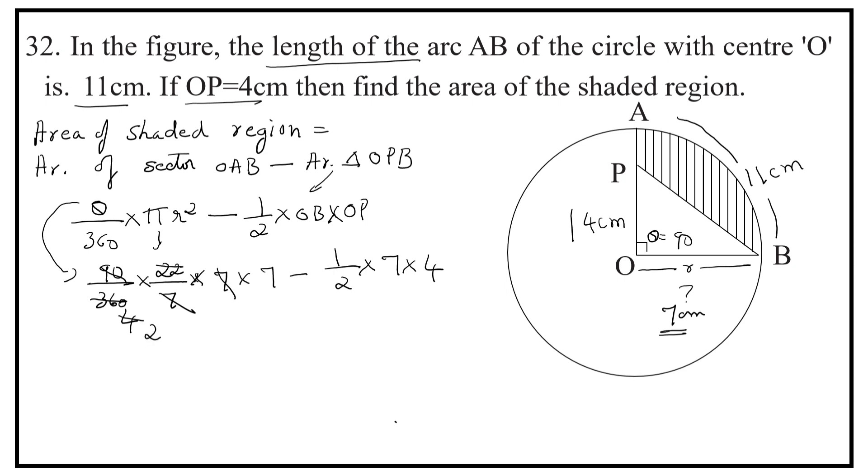Simplifying, that is equal to 77 by 2. 11 into 7 is 77. 7 into 4 is 28, which gives us 28 by 2.